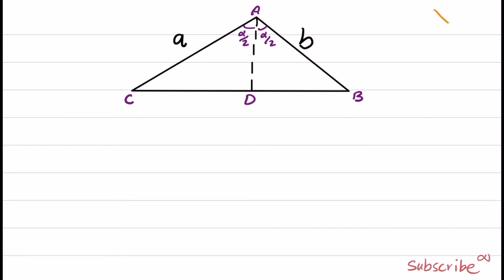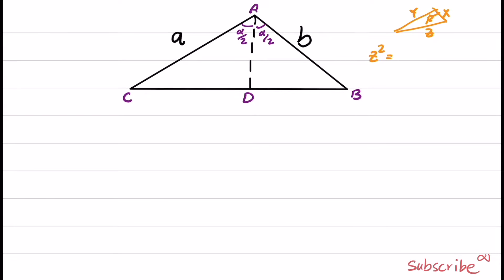What the law of cosines says is that if you have a triangle with sides x, y, z, and angle beta, then z squared is equal to x squared plus y squared minus 2 times x times y times cosine beta.